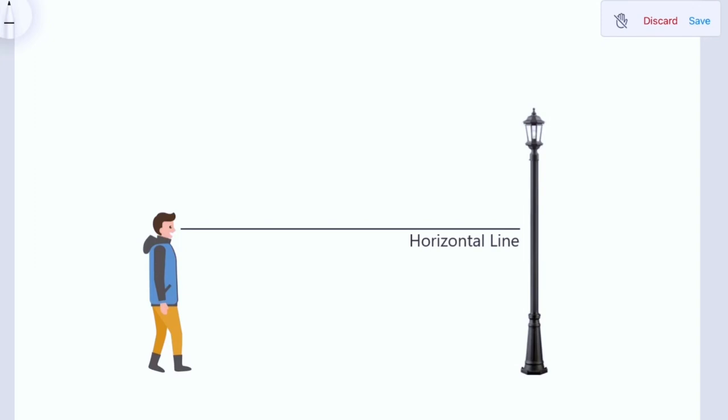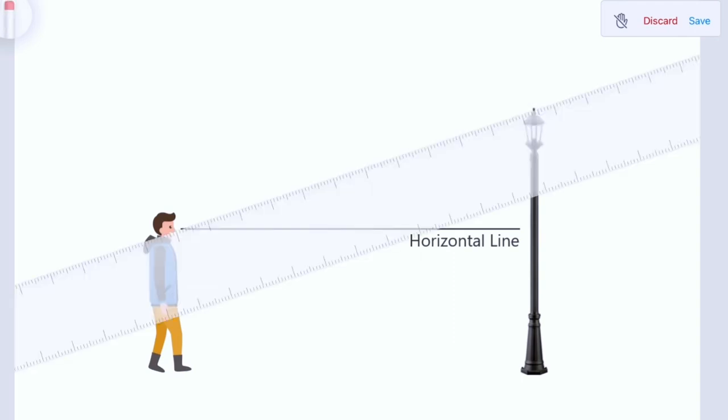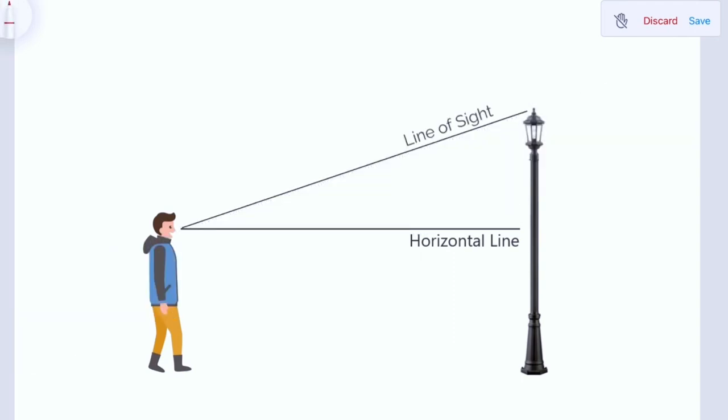Now if the guy wants to see the top of this pole, let me just draw the line of sight first. The person has to look up from this horizontal line. Then this is the angle of elevation, which is the angle between the line of sight and the horizontal line.